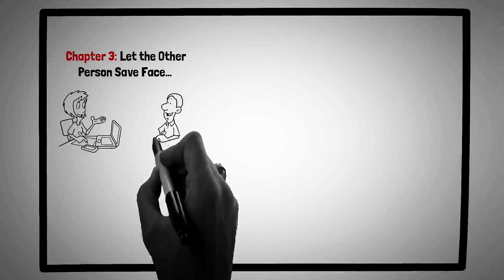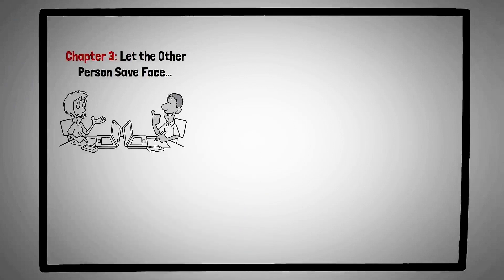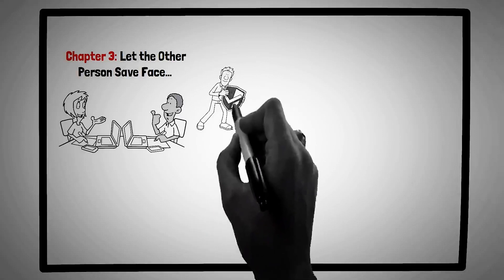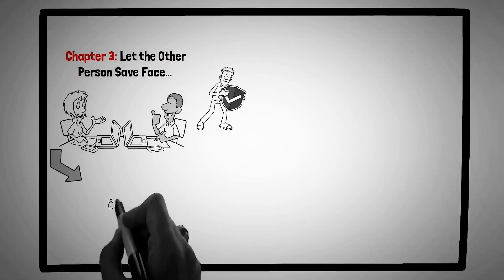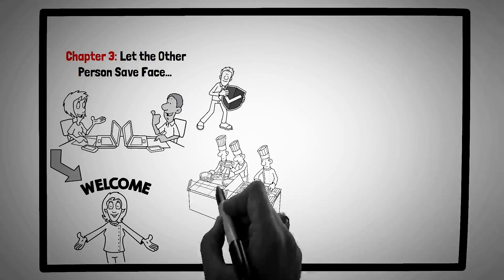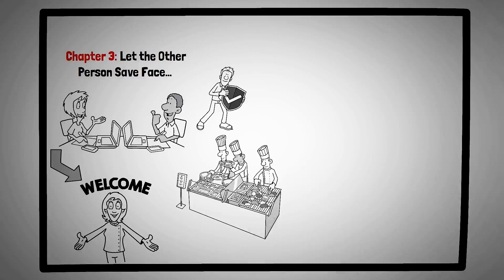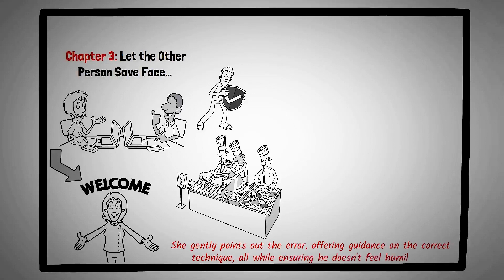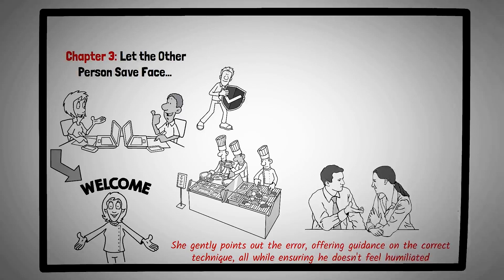Chapter three, let others save face. In the intricate dance of human interactions, preserving one's dignity often holds paramount importance. This chapter underscores this sentiment, emphasizing the value of allowing individuals to maintain their self-respect, even in situations where they might be in the wrong. Think of Rosa, a seasoned chef who runs a popular restaurant. During a busy evening, she notices a junior chef, Marco, making a mistake in a dishes preparation. Instead of calling him out in front of the entire kitchen staff, Rosa discreetly pulls Marco aside. She gently points out the error, offering guidance on the correct technique, all while ensuring he doesn't feel humiliated. Marco, grateful for Rosa's tactful approach, corrects his mistake, and continues to work with renewed focus and confidence. Rosa's decision to let Marco save face not only preserves his dignity, but also fosters a positive and supportive work environment.